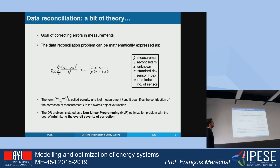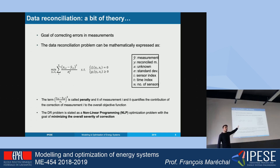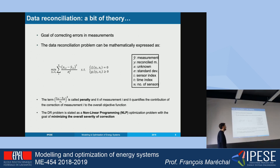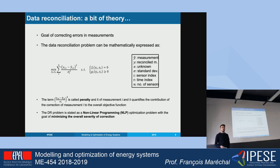A data reconciliation problem is essentially an optimization problem. You have an objective function which is the minimization of the sum of the squared difference between the measured value and the true value — the reconciled value — weighted by the variance (sigma is the standard deviation of the sensor), summed over all sensors. This objective function is constrained by equality and inequality constraints, which are all the equations of your model: mass balances, energy balances, performance equations, etc. The term inside the objective function is called the penalty, because it quantifies the penalty of each sensor.